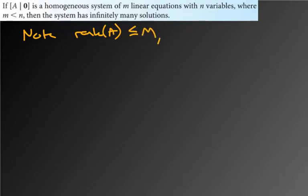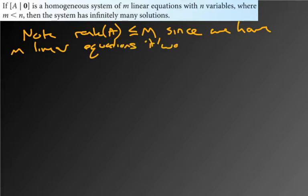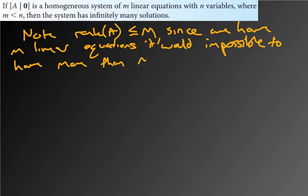And that's pretty clear, but I'll just explain. Since we have M linear equations, it would be impossible to have more than M non-zero rows, right? I mean, it's just, like, if you only have three rows,